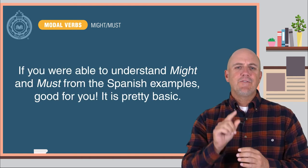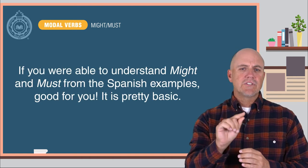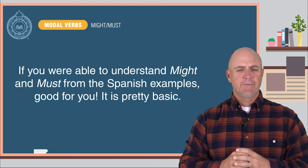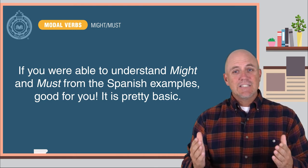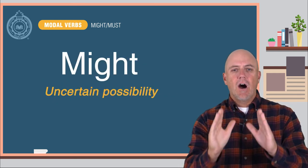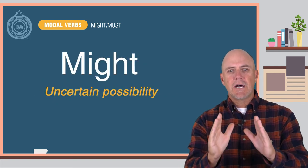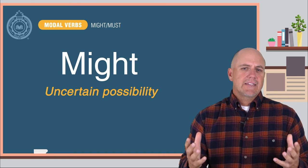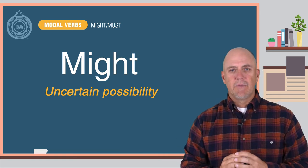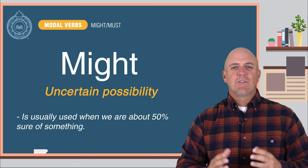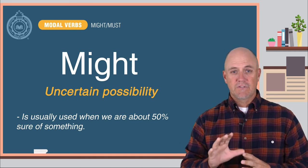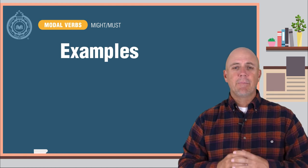If you are able to understand might and must from the Spanish examples, good for you. It is pretty basic. Might is used to express an uncertain possibility. It is sort of like saying maybe — tal vez o es posible. Might is usually used when we are about 50% sure of something. Here are some examples.